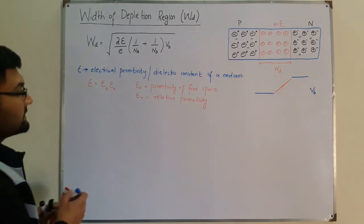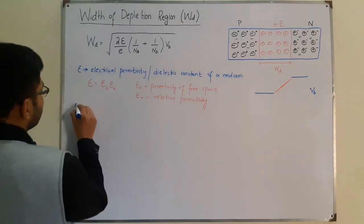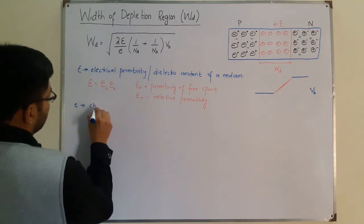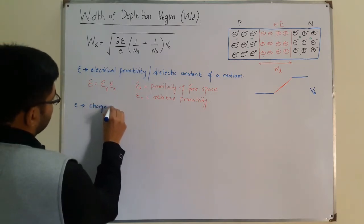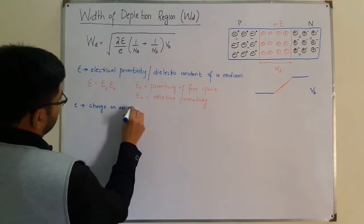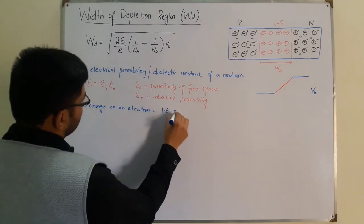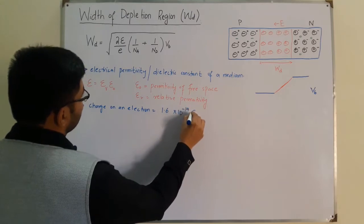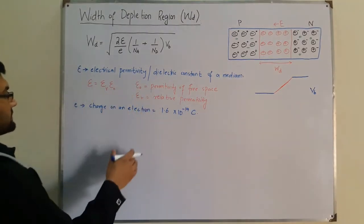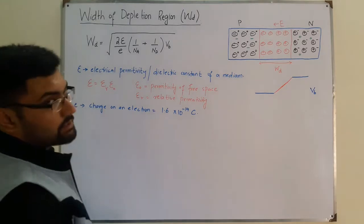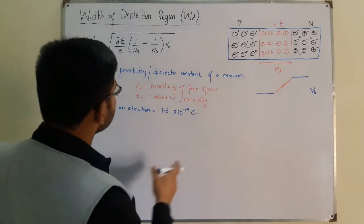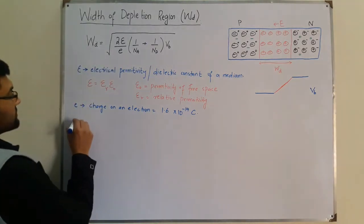This e represents the charge on an electron, which is 1.6 into 10 to the power negative 19 coulombs. I don't know why I'm writing this again, as we saw these values in the previous video.